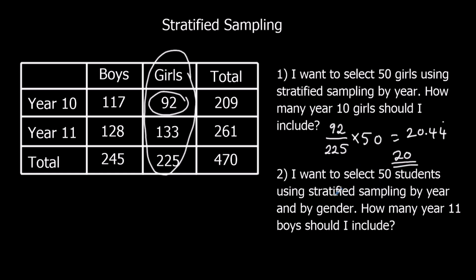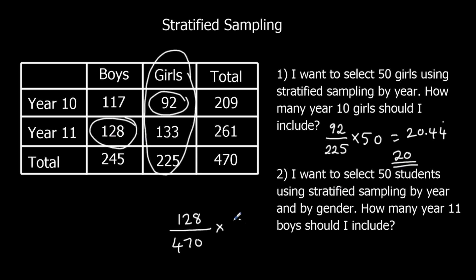For question two, I want to select 50 students using stratified sampling by year and gender, so it's out of everyone — out of 470. How many year 11 boys should I include? Year 11 boys: that's 128. So we've got 128 out of 470 in total. That's the fraction I want, and I want that fraction of 50. So we type 128 over 470 times 50 into the calculator.